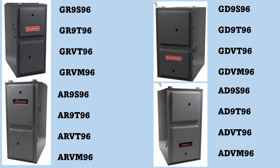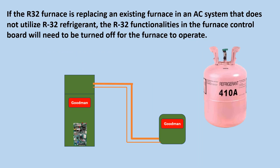All of the new Goodman and Amana R32 gas furnaces, whether from 80% to 97%, are equipped with a control board capable of shutting off the gas heat and turning on the blower fan in case of an R32 refrigerant leak in the indoor evaporator coil. If the R32 furnace is replacing an existing furnace in an AC system that does not utilize R32 refrigerant, the R32 functionalities in the furnace control board will need to be turned off for the furnace to operate.